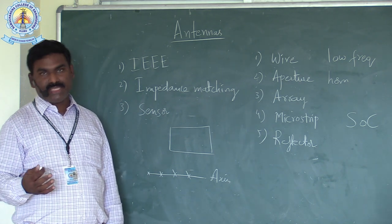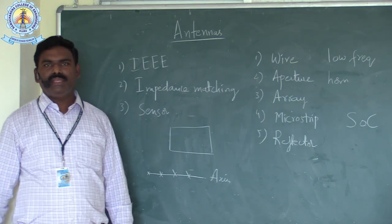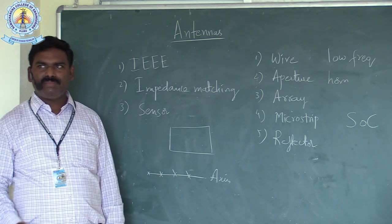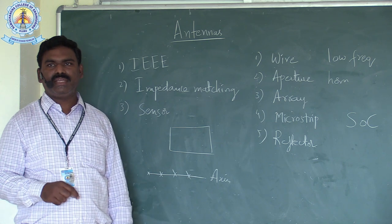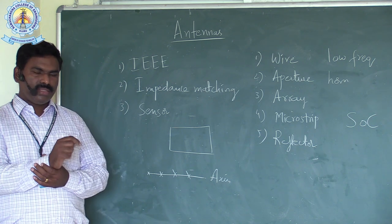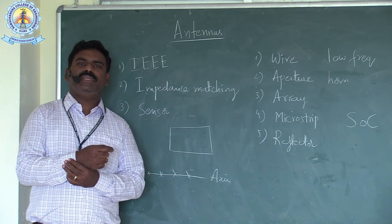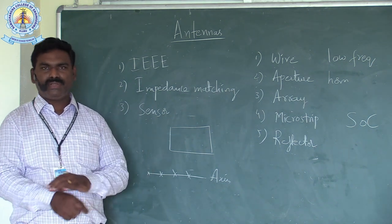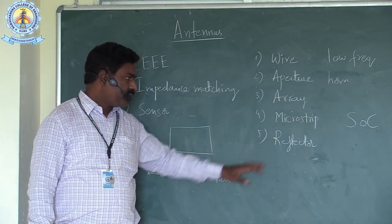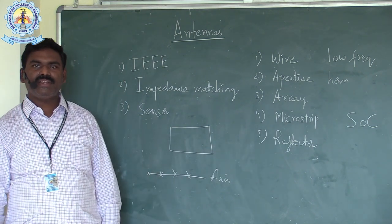Microstrip antennas can be integrated onto a substrate and used for wearable devices. For example, a small baby admitted to a NICU — we want to monitor vital parameters like blood pressure and heartbeat. A band tied to the wrist can measure the heartbeat through a wearable antenna. A wearable antenna is an example of a microstrip antenna.